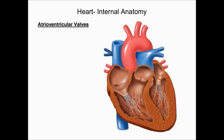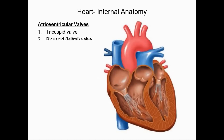There are two atrioventricular valves. The first is the tricuspid valve, found between the right atrium and right ventricle, which prevents oxygen-poor blood in the right ventricle from flowing back into the right atrium. The second is the bicuspid or mitral valve, found between the left atrium and left ventricle, which prevents oxygen-rich blood in the left ventricle from flowing back into the left atrium. A memory tip: tricuspid has the letters 'RI' in it, indicating it's on the right side — and by default the bicuspid valve is on the left.